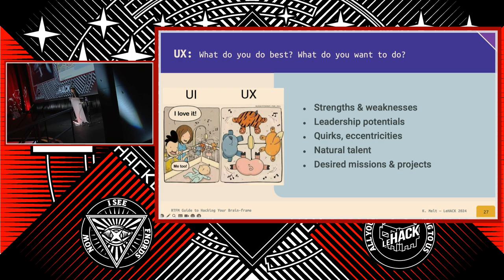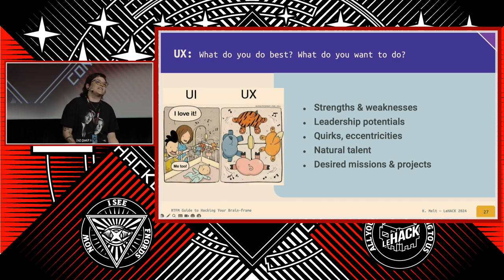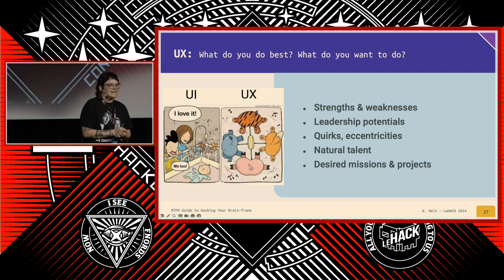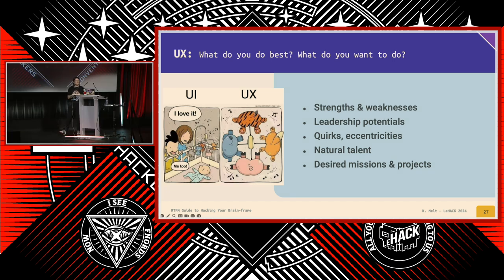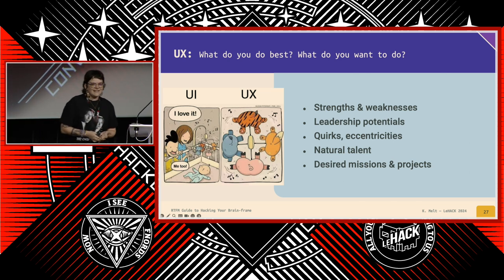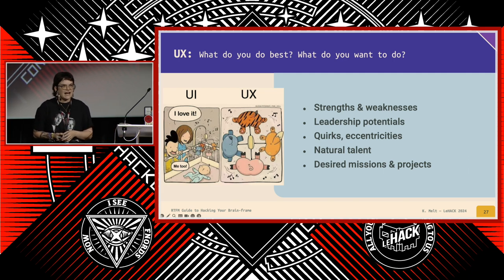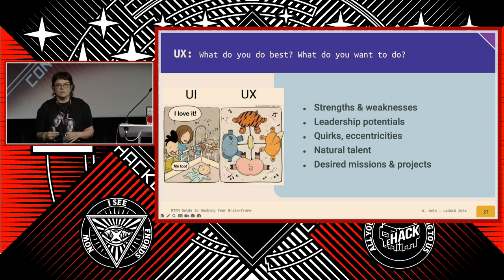For your user experience section: what do you do best and what do you want to do? What are your strengths? And be honest about your weaknesses as well. There's a connotation with the word weakness, especially if you're someone dealing with disabilities, but it's important to be aware of the transparent nature of your whole person because that's how we grow and change. Do you have leadership potential, or would you rather do anything else except leadership? Are you quiet or do you like to talk? Would you rather do voice calls or would you rather type? Do you have specific projects you want to work on or do really well?